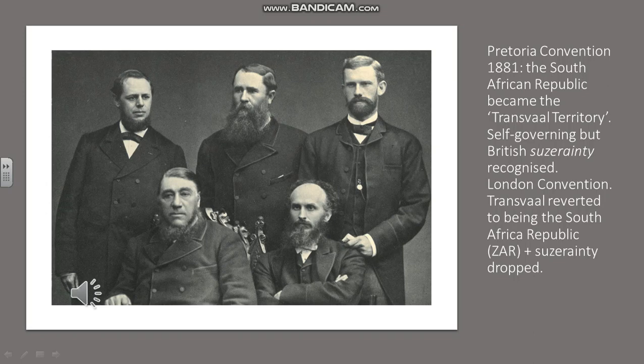There were two peace treaties. First, the Pretoria Convention in 1881, in which the South African Republic became the Transvaal Territory — self-governing but with British suzerainty recognised, meaning the Transvaal Boers could rule themselves but in matters of foreign policy the British had the final say. Then there was the London Convention of 1884, in which the Transvaal reverted to being the South African Republic and suzerainty was dropped.